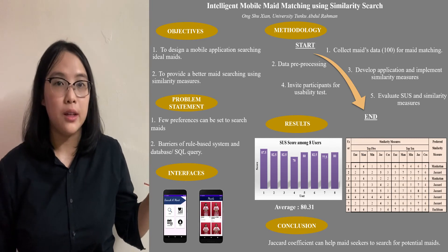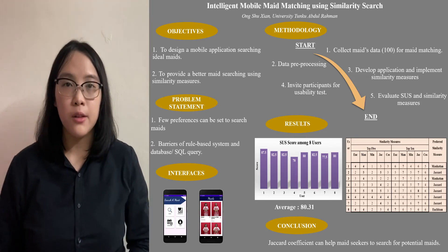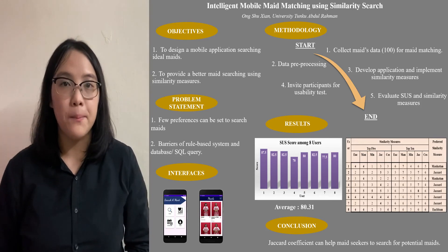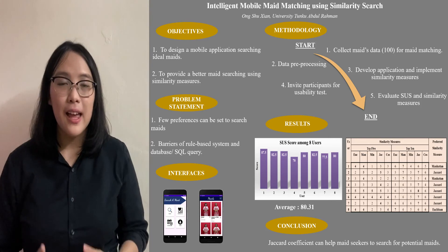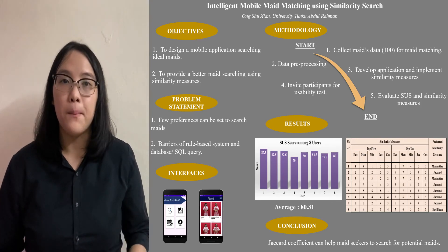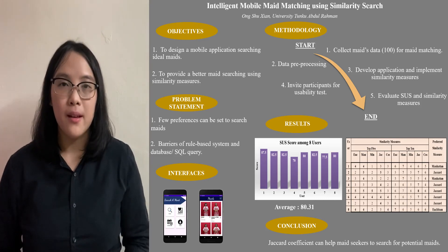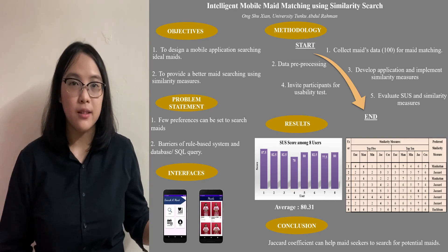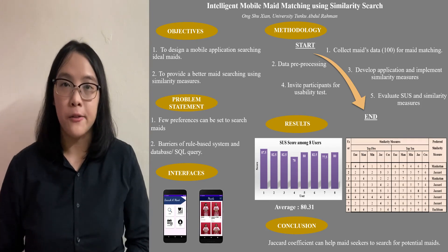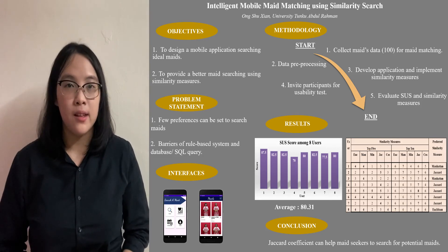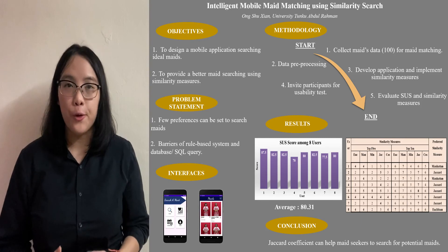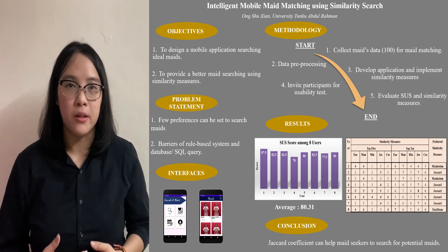According to the result of the usability test, the average SUS score is 80.31, which is far better than the minimum required score of 68. The best similarity measure was selected based on the majority votes of the participants. There were 5 out of 8 participants who voted for Jaccard Coefficient, 2 participants voted for Manhattan Distance, 1 participant voted for Euclidean Distance, and nobody voted for Minkowski Distance and Cosine Similarity.